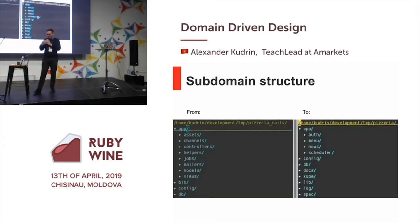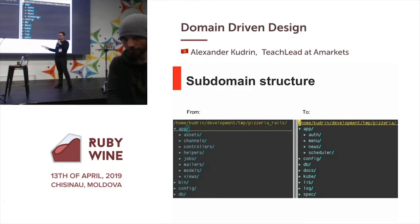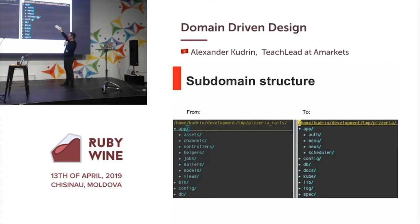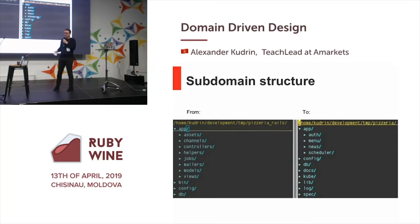How do we implement these ideas? We implement each new domain with a new microservice, a new application. And each application we separate by subdomains with a folder structure — like the Django framework. For example, the Pizzeria domain has subdomains like authorization, the menu, news about the current pizzeria such as advertising information, and schedule — because everyone wants to know when the pizzeria opens and closes.